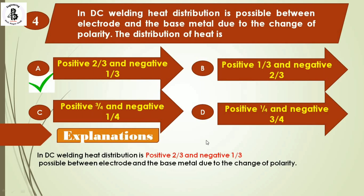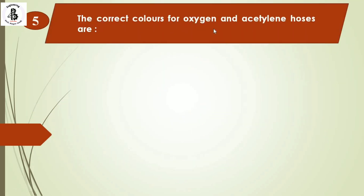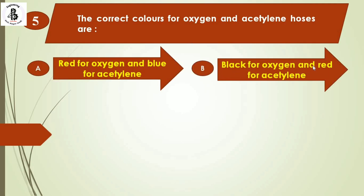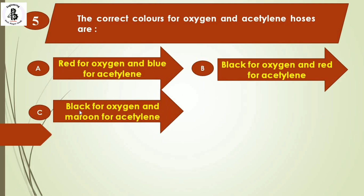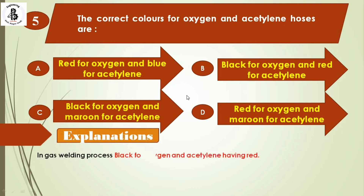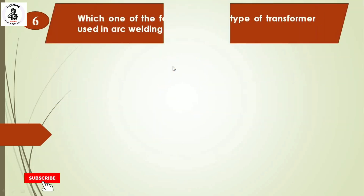The next question: the correct colors for oxygen and acetylene hoses are — Option A: red for oxygen and blue for acetylene, Option B: black for oxygen and red for acetylene, Option C: black for oxygen and maroon for acetylene, Option D: red for oxygen and maroon for acetylene. In gas welding, black is for oxygen and red is for acetylene. The right answer is Option B.